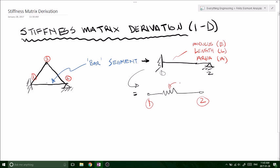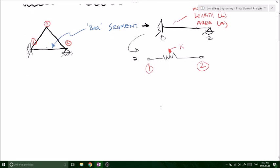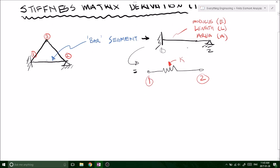And we all know that every spring has a spring constant K. And in this case, now that we've defined the spring to be an analogy of a bar segment with a modulus of elasticity, a length, and an area.